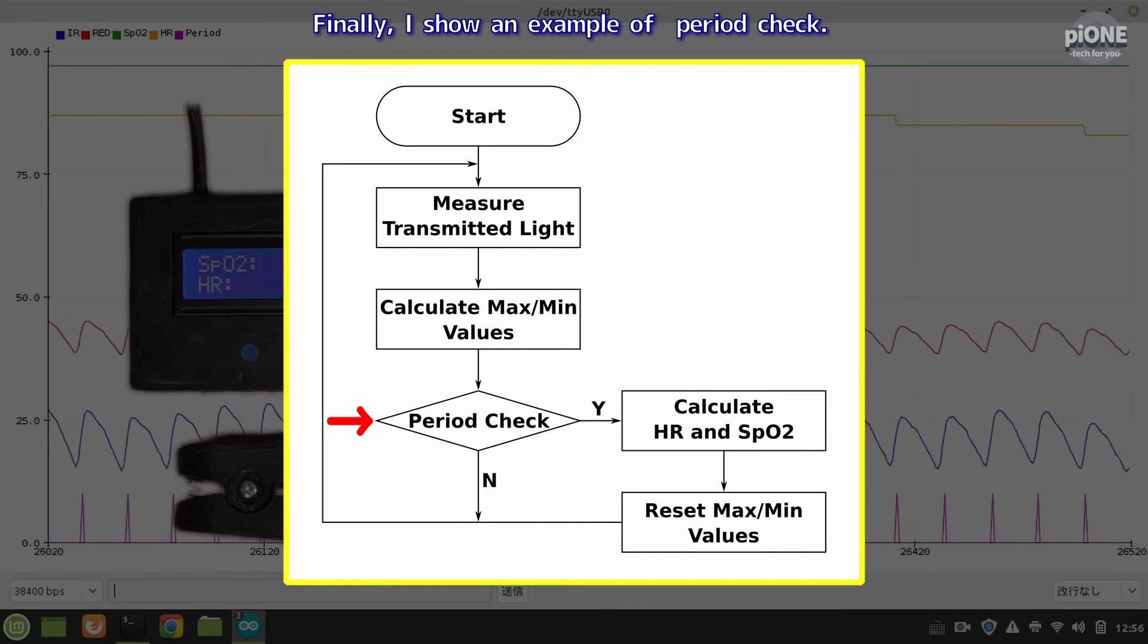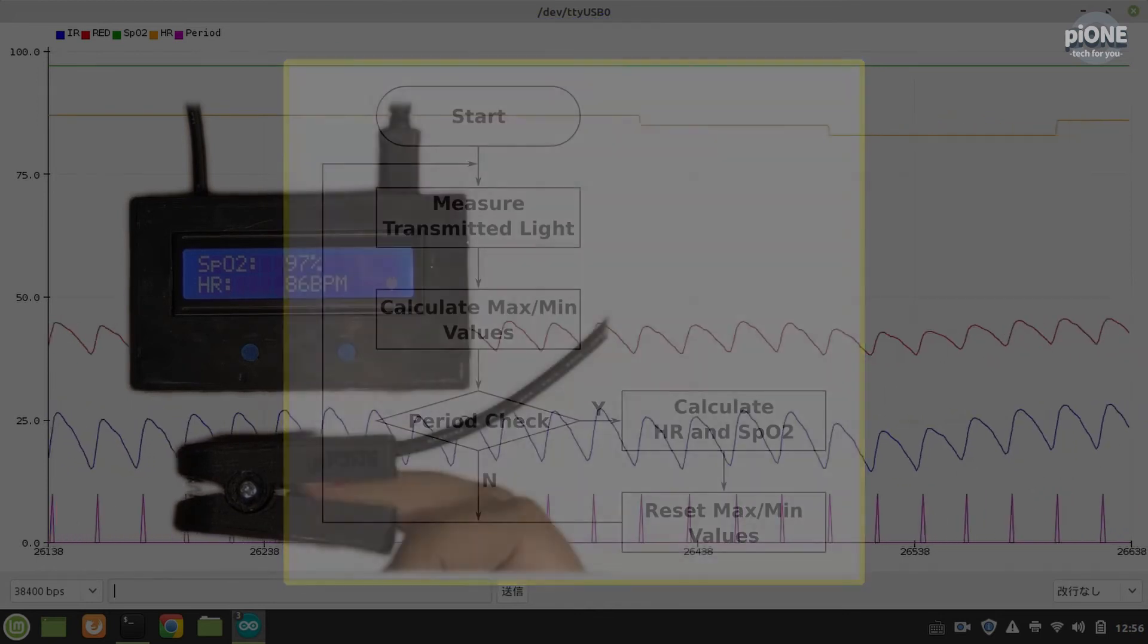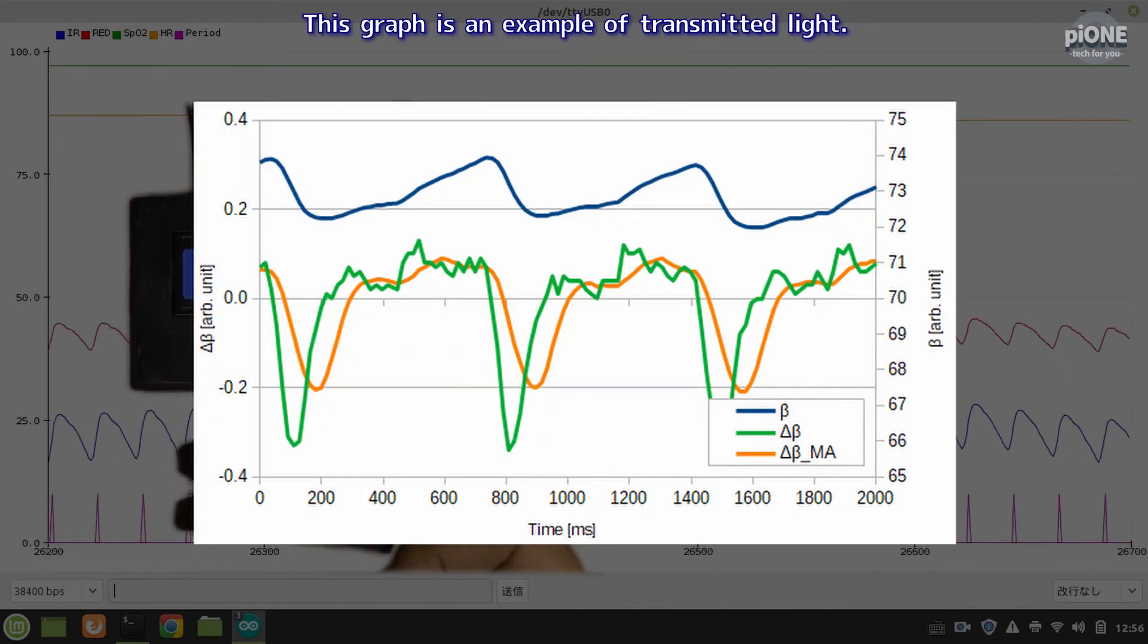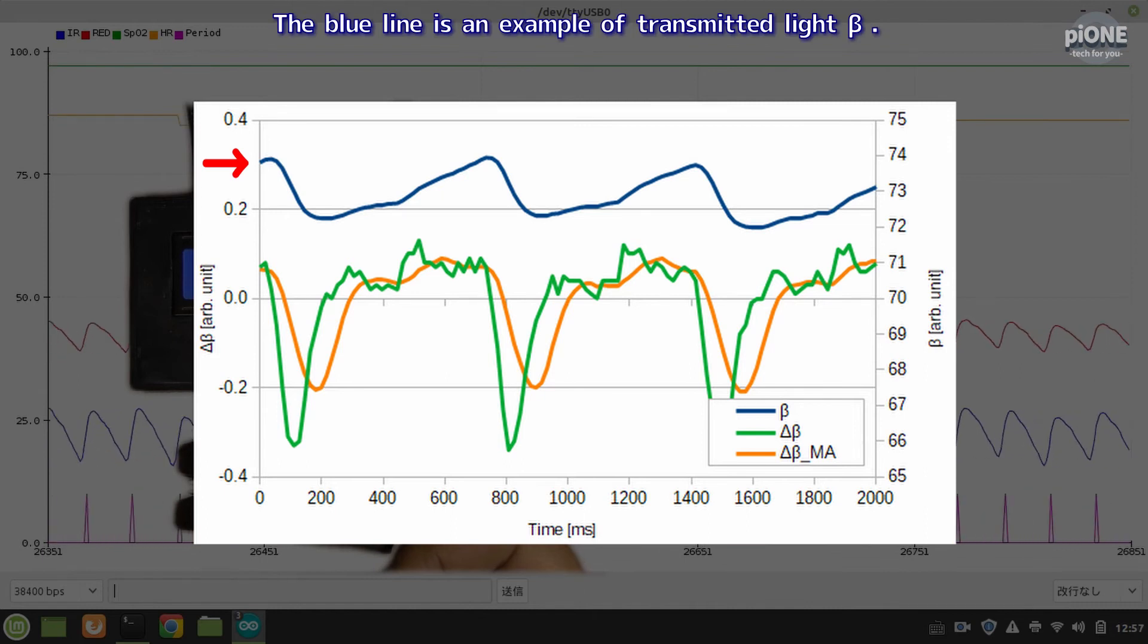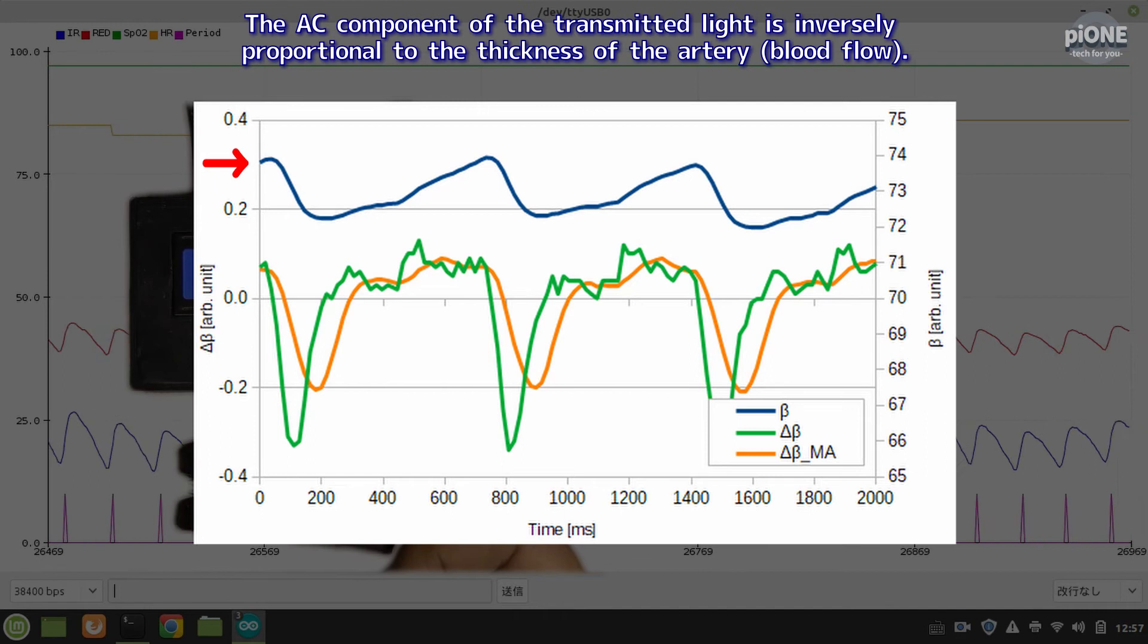Finally, I show an example of period check. This graph is an example of transmitted light. The blue line is an example of transmitted light beta. The AC component of the transmitted light is inversely proportional to the thickness of the artery.